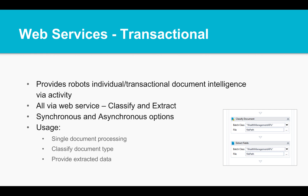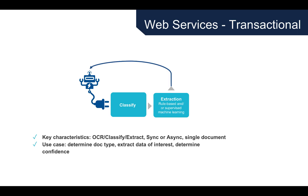The next method focuses on the processing of a single document — essentially a transaction. Through this method, the robot can receive the classified document type, extracted data, and the confidence levels immediately via web service response. This provides real-time decision and branching capabilities for a digital worker. This can be executed synchronously or asynchronously through EFASOFT's array of activities. This transactional method creates a tight feedback loop between UiPath and the document intelligence services provided by EFASOFT, and is appropriate for a wide variety of use cases.